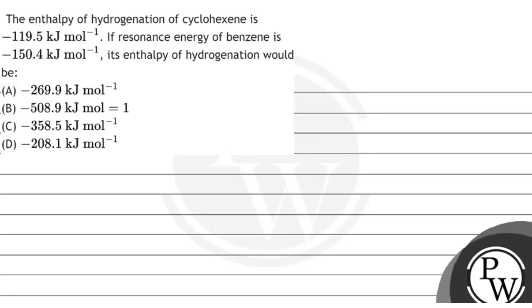Hello guys, let's take the question. The enthalpy of hydrogenation of cyclohexane is -119.5 kJ/mol. If the resonance energy of benzene is -150.4 kJ/mol, what is the enthalpy of hydrogenation of benzene?